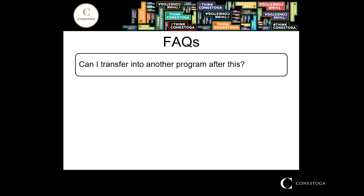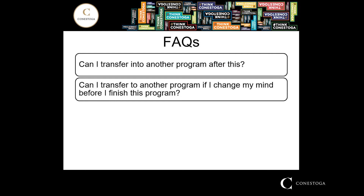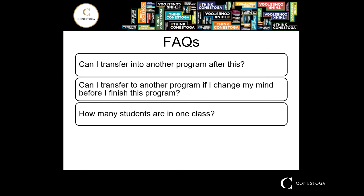Let's go over some of the most frequently asked questions. Number one is always: can I transfer into another program after this? Absolutely — that is in fact the intent of the program, to help you transfer into another program and continue your education, whether that is a two-year business diploma, a three-year advanced diploma, or even a degree. Can I transfer to another program if I change my mind before I finish? Absolutely — sometimes students choose to transfer after the first semester rather than waiting to complete the full program.